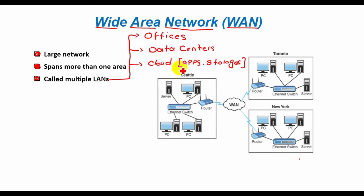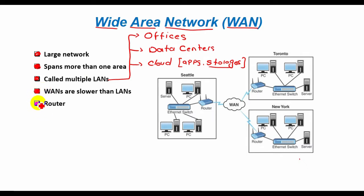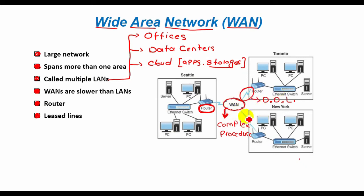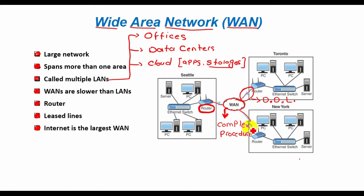WANs are slower than LANs and often require additional and costly hardware such as routers, dedicated leased lines, and complicated implementation procedures. WANs can span wider for international business, but they are also essential for everyday use, as the internet is considered the largest WAN in the world.